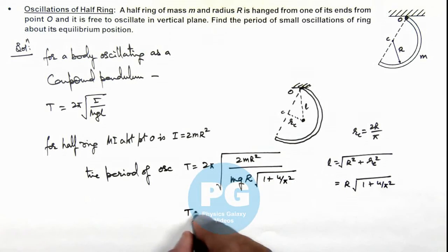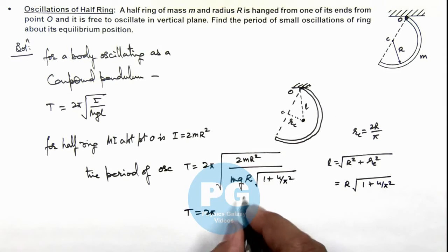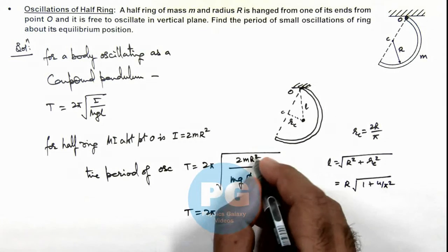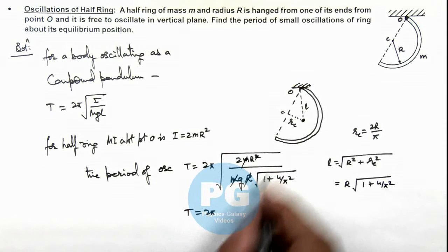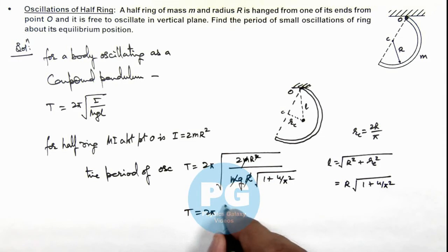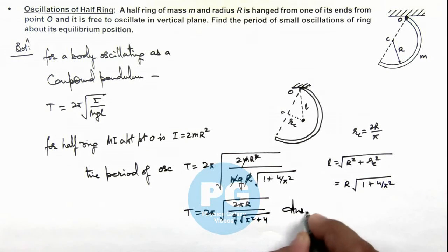On simplifying, the value of this time period we are getting is, r gets cancelled out and mass gets cancelled out, so this will be 2π√(2r/g√(π² + 4)). That will be the final result of this problem.